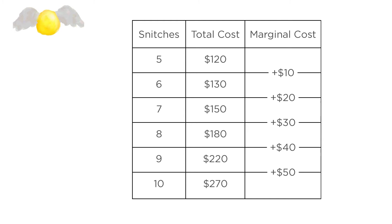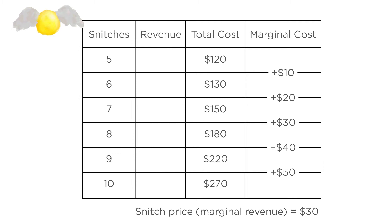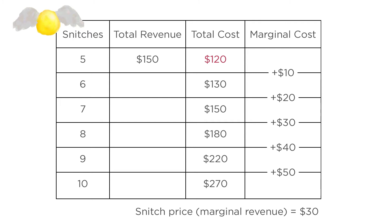Suppose that the current price of snitches in the market is $30 per snitch, and the firm is currently producing five snitches. Five snitches at $30 each gives the firm revenues of $150, and the total cost of the firm is $120, so profit is $150 minus $120, or $30.